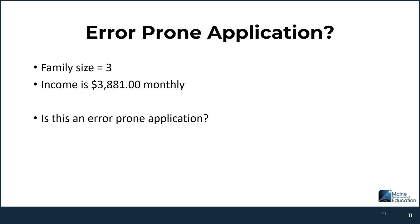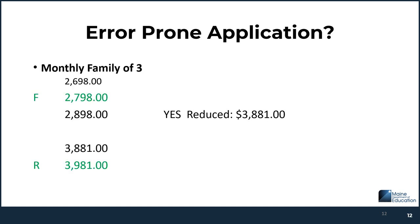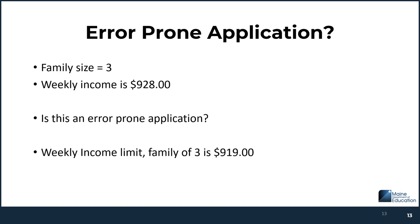Here's an example: family size of three, income is $3,881 monthly. Is this an error-prone application? The answer is yes, because the reduced qualifier is $3,981 and $3,881 is $100 below it. So it would be counted as a reduced error-prone application. The family has monthly income of $3,881, the reduced guideline is $3,981 — $100 difference — so yes, it is an error-prone application.